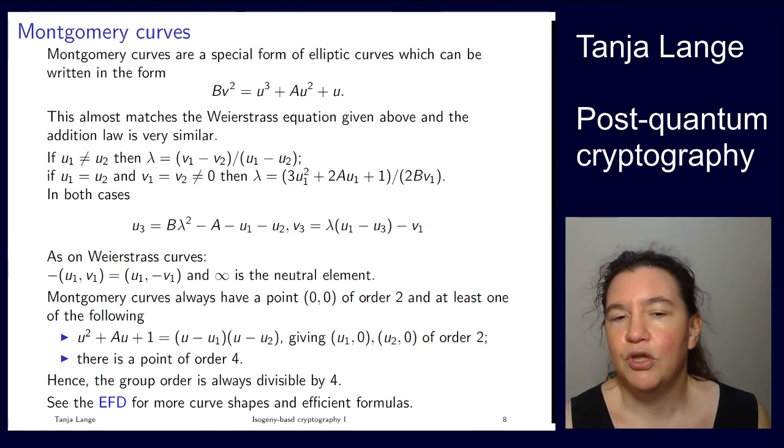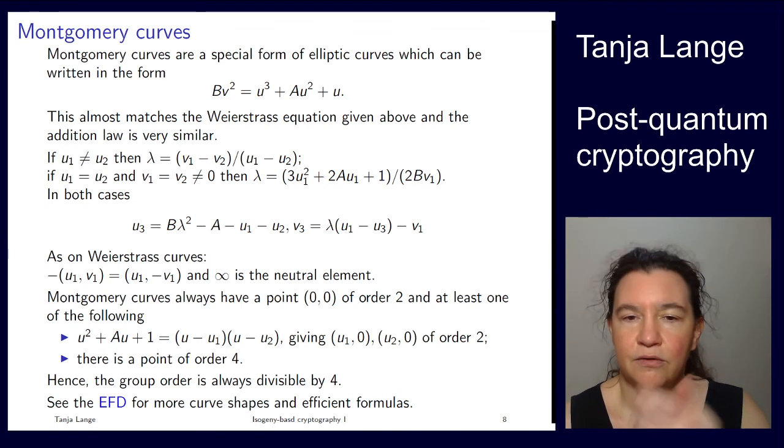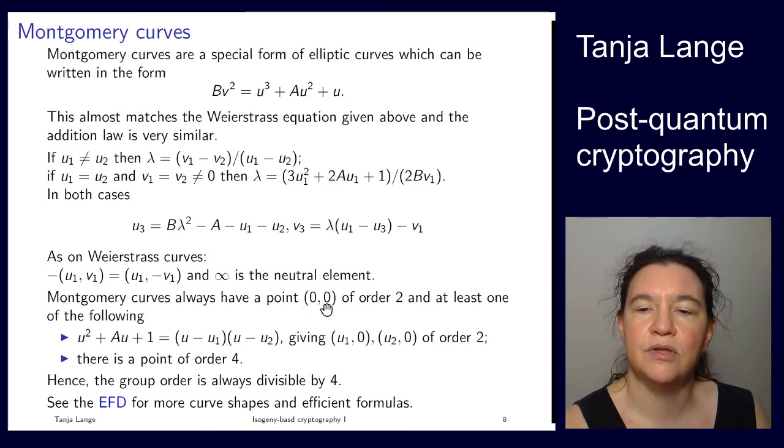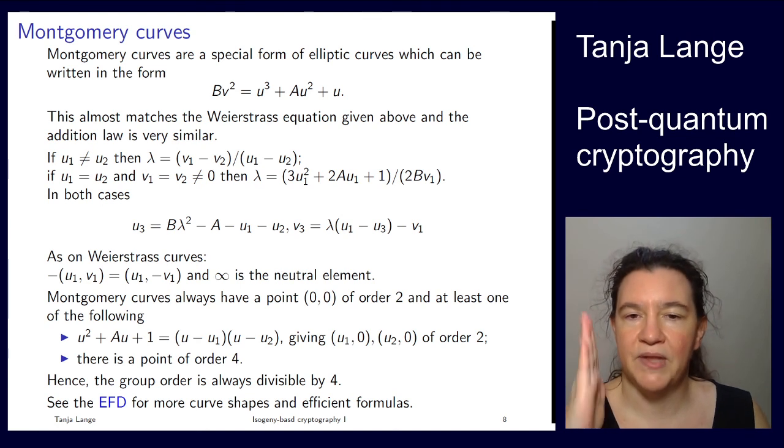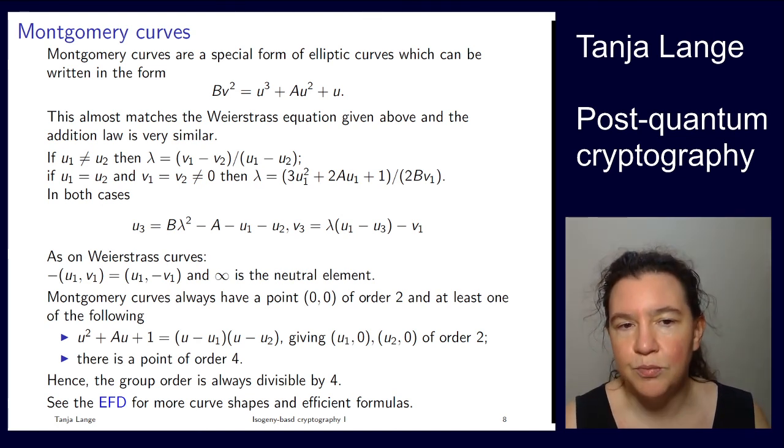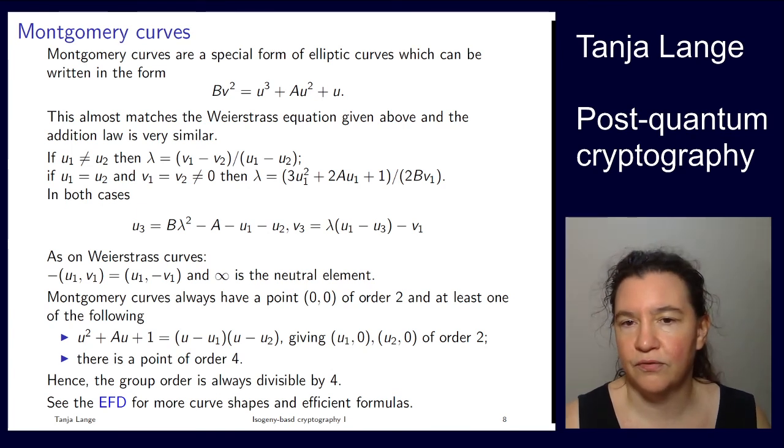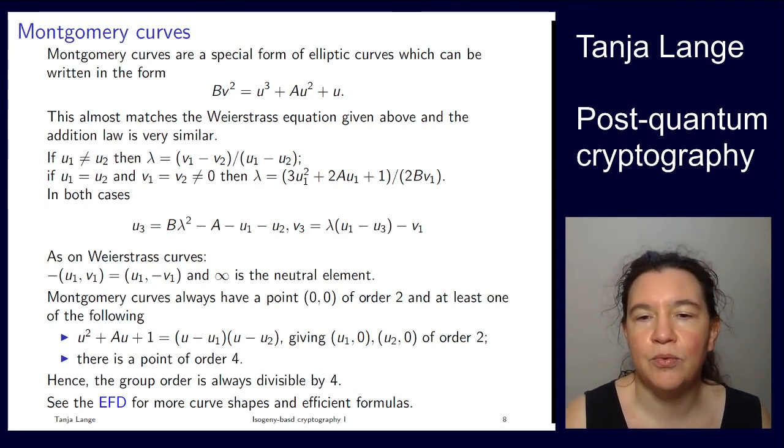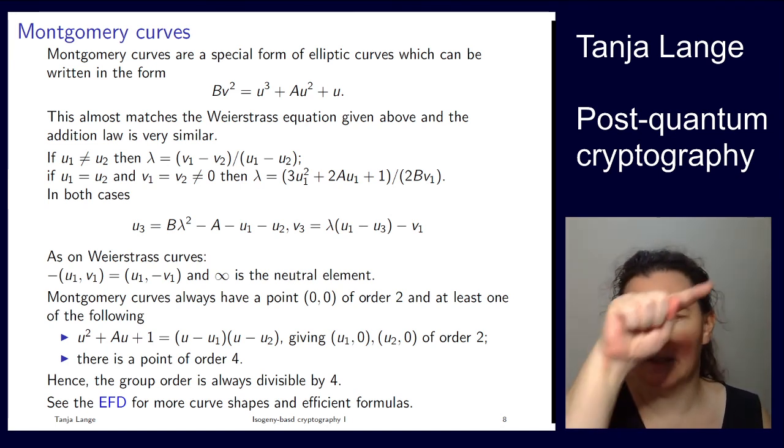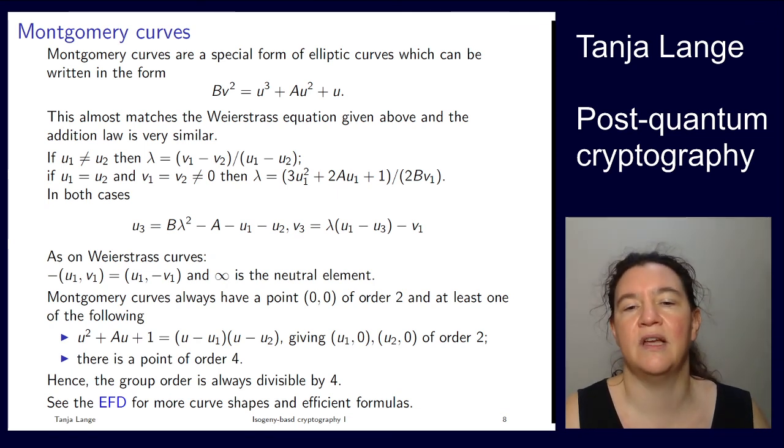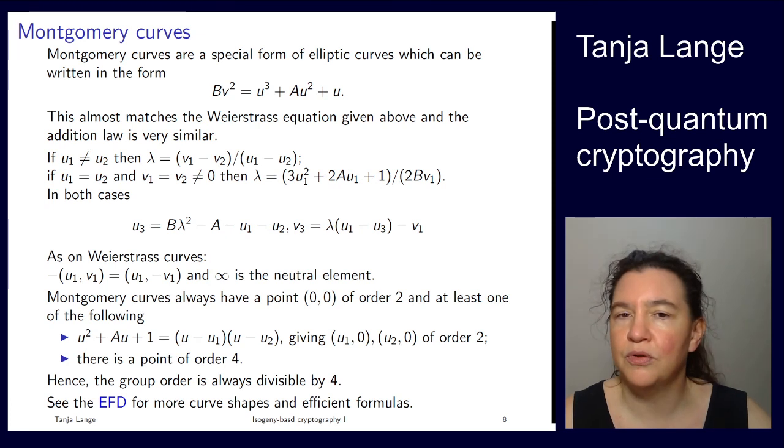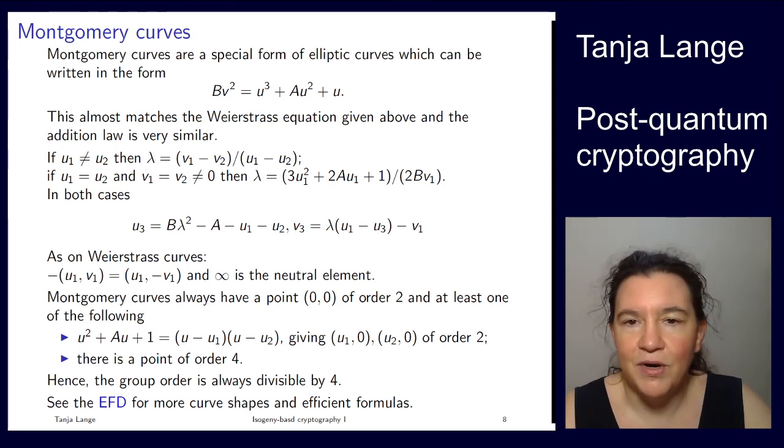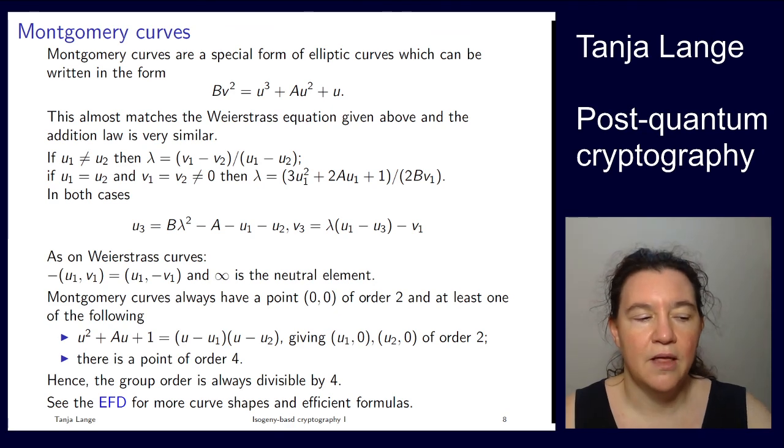All our operations are going to take place in Montgomery curves. When you draw them, you find something which looks like either of the two pictures. There's always a point on this curve that has a vertical tangent, so it has order 2 at this point. Then you either have a point of order 4, or at least one of the following: you have two other points of order 2. If you're interested in finding more about elliptic curves, how to compute on them efficiently, what else they could look like, please take a look at the EFDs, the Explicit Formulas Database. For this unit on isogenies, this part is sufficient.